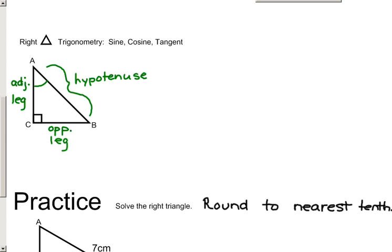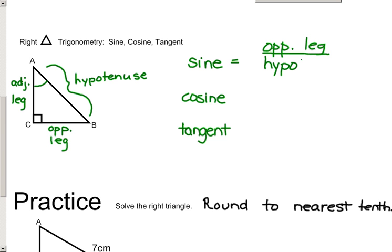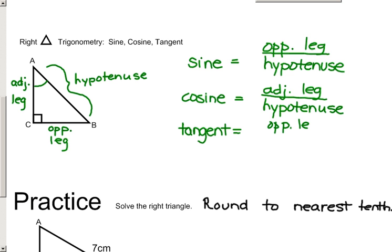So there are three ratios that we focus on: the sine ratio, the cosine ratio, and the tangent ratio. Whenever you are talking about your trig ratios, you always refer to an angle of reference. Sine is the ratio of the opposite leg over the hypotenuse. The cosine is the ratio of the adjacent leg over the hypotenuse. And tangent is the ratio of the opposite leg to the adjacent leg.